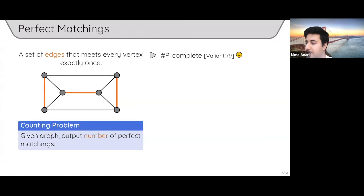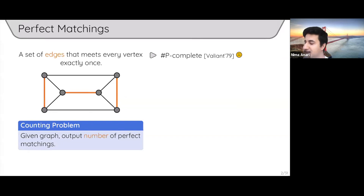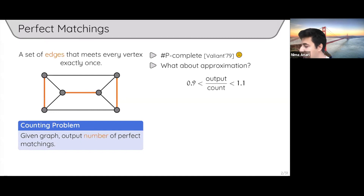This was done by Valiant in 1979, whereas the search version — finding whether a perfect matching exists, or distinguishing between zero and non-zero counts — is known to be polynomial time. In fact, perhaps the first polynomial-time algorithms were designed for this problem.